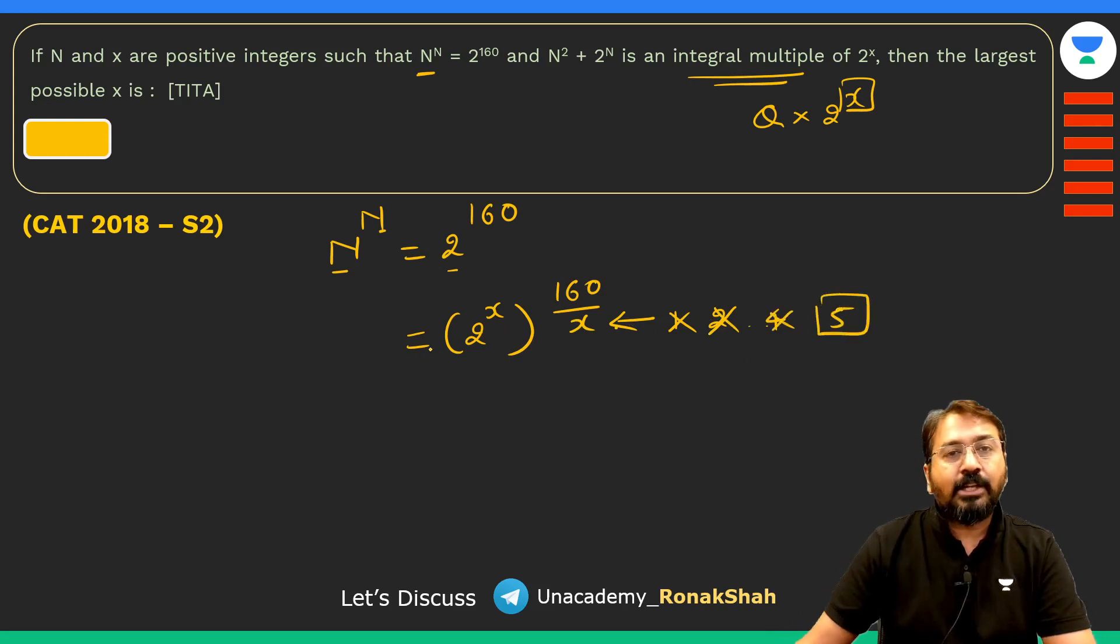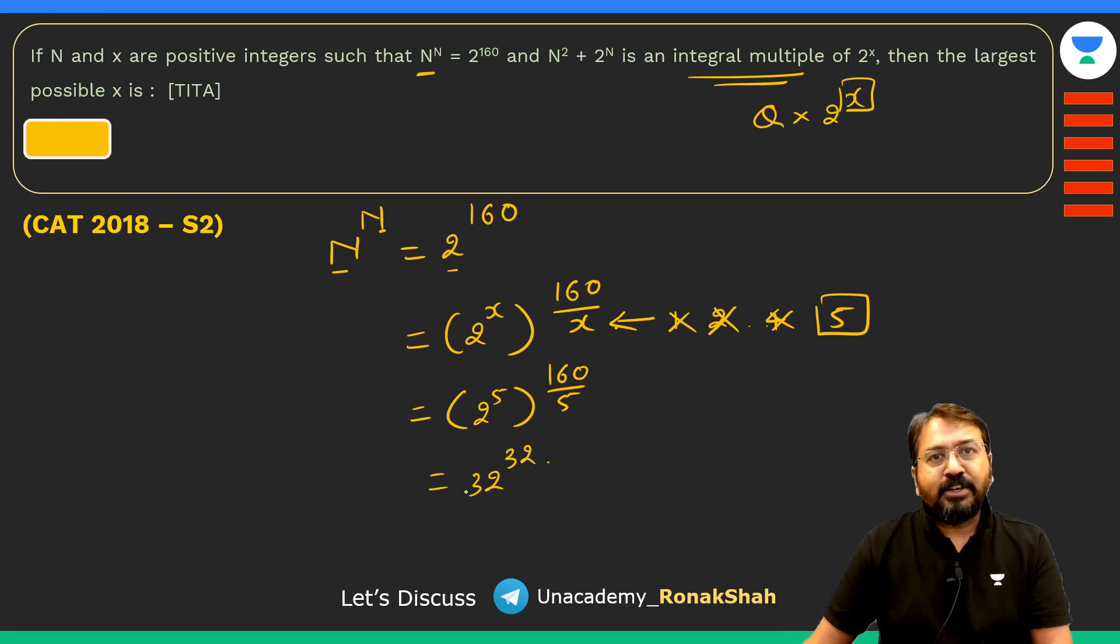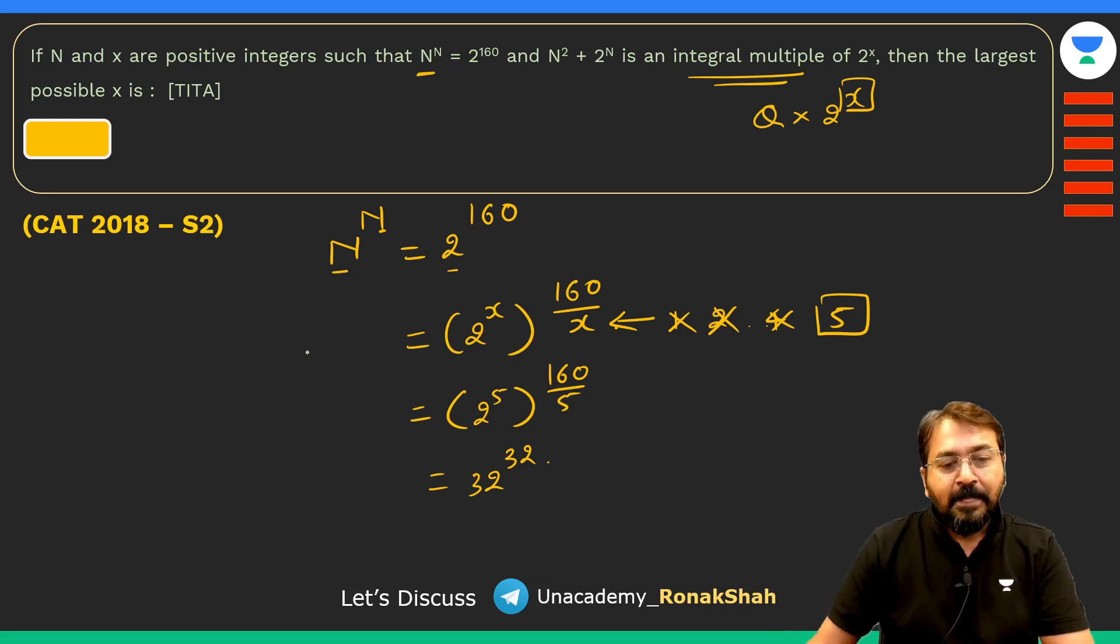Because 2^5 is 32 and 160/5 is also 32, so I can say this will become 32^32. Many of you might have quickly figured out this thing—2^160 is nothing but 32^32, so it completely depends on your calculation speed. So now we have got the value of N as 32.